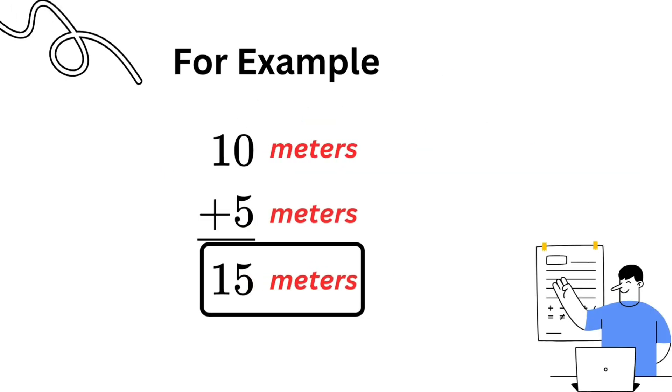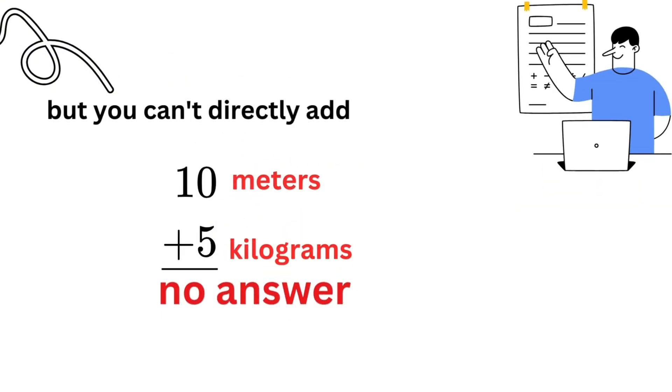For example, 10 meters plus 5 meters equals 15 meters. This means we can add numbers with same units. But you can't directly add 10 meters and 5 kilograms, because these have different units.